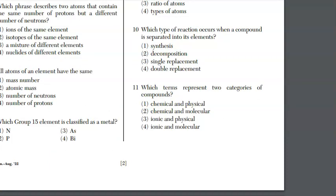Question 10, which type of reaction occurs when a compound is separated into its elements? These four choices are the basic chemistry reactions. When we're going to take a compound and separate it into its elements, we're breaking it down, and that is decomposition. Synthesis is the opposite of decomposition. Single replacement has an element and a compound as reactants. Double replacement starts with two compounds and ends with two compounds.